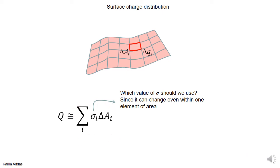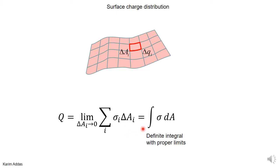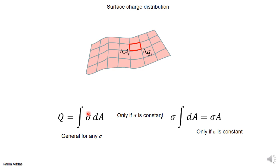How does this approximation get better and better? We need to make the number of elements go to infinity, or the size of each element go to zero. In that case, you will be using the correct value of sigma at every single point. We know the limit of sums can be written as an integral, so you can write Q as the integral of sigma dA. This is the general formula for total charge on a surface, evaluated as a definite integral with proper limits. Now, if sigma happens to be a constant, you can take it outside the integral, giving sigma times the total area. But remember, this is only valid if sigma is constant; if not, you must keep it inside the integral.